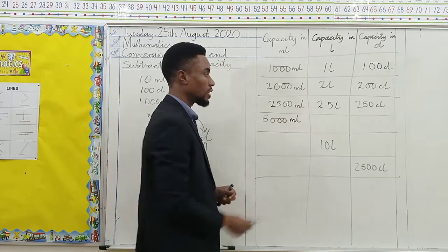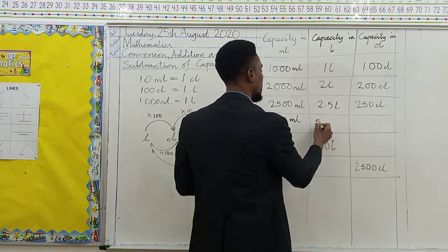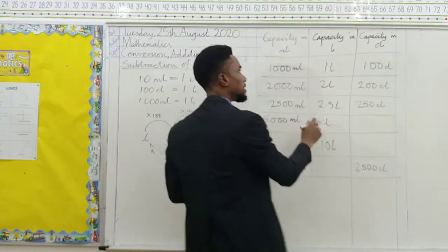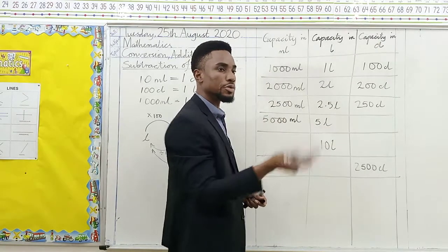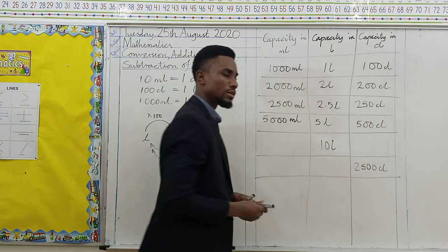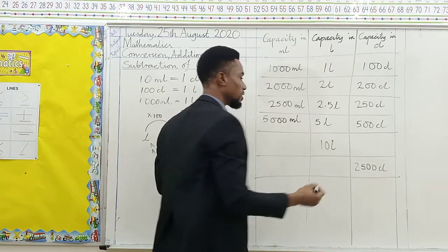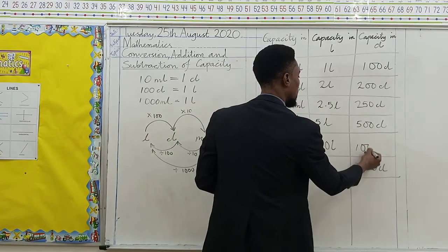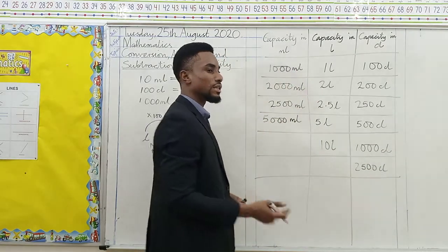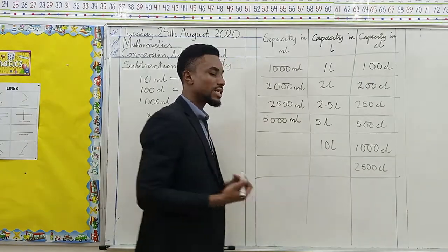Now: milliliters to liters — three zeros off — gives us 5 liters. Liter to centiliters — two zeros in — 500 centiliters. And then liters to centiliters — two zeros in — 1,000 centiliters. Liters to milliliters — three zeros added to the initial one zero — gives us four zeros total, that's 10,000 milliliters.